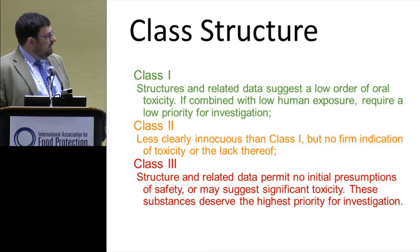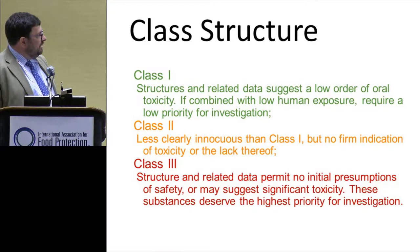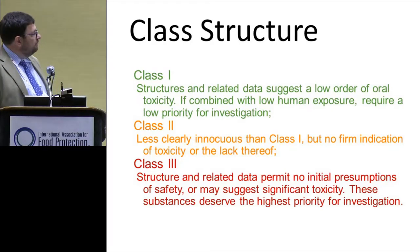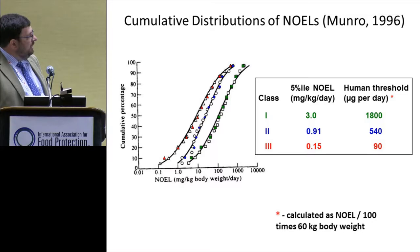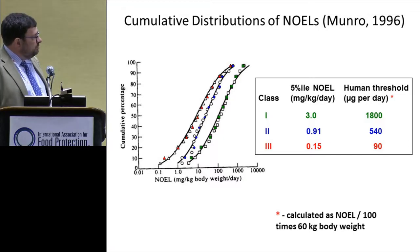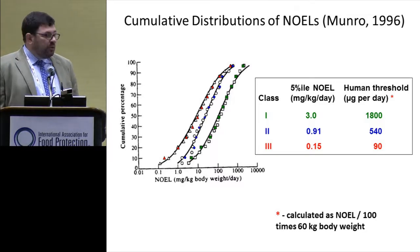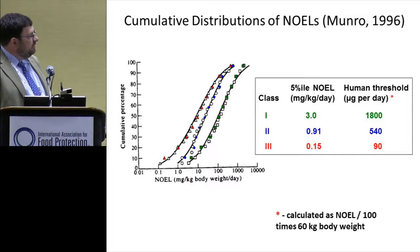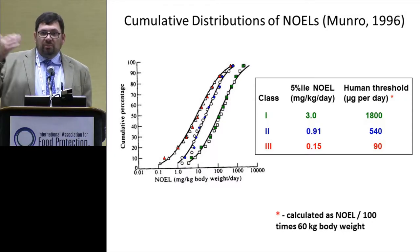This 1978 publication in Food and Cosmetics Toxicology has had a tremendous influence. Class I is low order of oral toxicity concern and low priority for investigation; Class III is high priority for investigation; and Class II is the middle ground. Ian Monroe established the 5th percentile NOEL, which allowed us to define specific clear thresholds — 1,800 micrograms per person per day for Class I, 540 for Class II, and 90 micrograms per person per day for Class III. If you're below that level, you have low concern for toxic concern; if above, then the question becomes what do you do — more testing or something else?